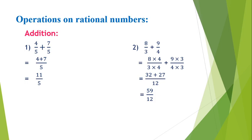The first example is 4 upon 5 plus 7 upon 5. As the denominators are the same, we can add directly. Taking 5 as common, 4 plus 7 is written in the numerator. 4 plus 7 gives you 11, so the answer is 11 upon 5.